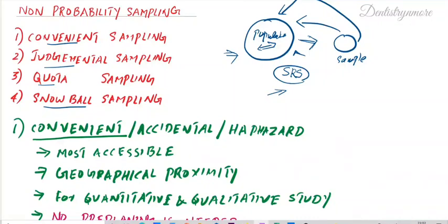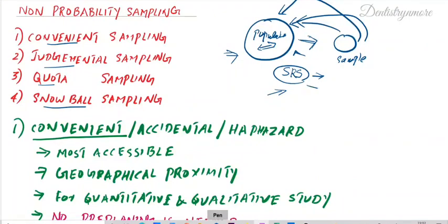In probability sampling, the sample is definitely representative of the population because we follow simple random techniques — whether simple random, systematic, stratified, multi-stage, or cluster sampling. All these techniques follow simple random method, which is very powerful in maintaining the representativeness of the population, so we can extrapolate results from the sample back to the population.